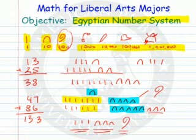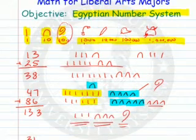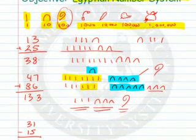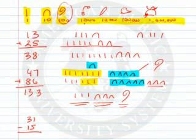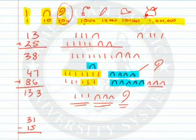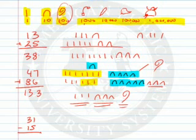Let's look now at a subtraction problem using this system — one where we have to do some trading. We'll do 31 minus 15. I'll put in the symbols for you.